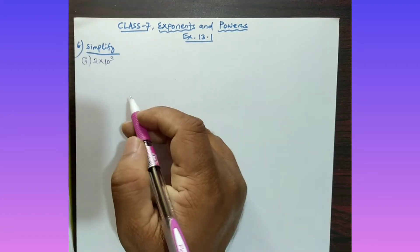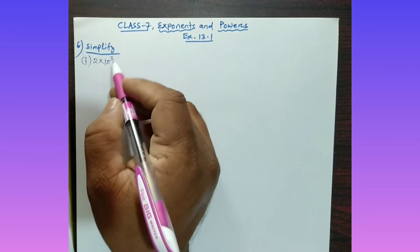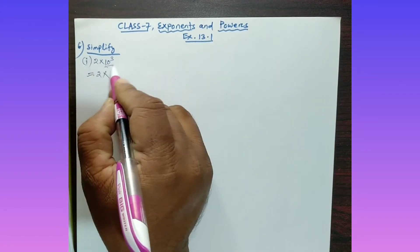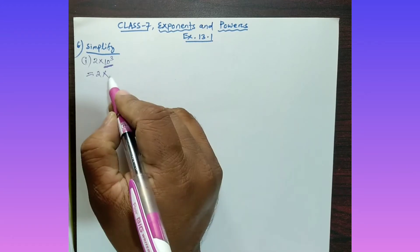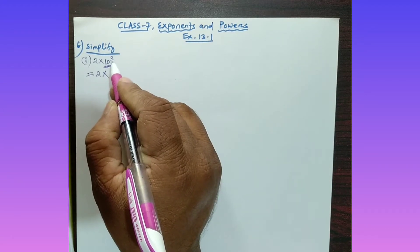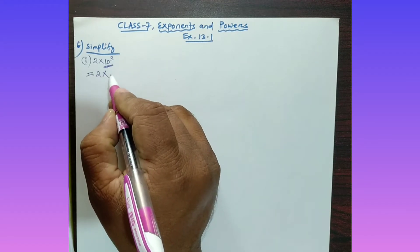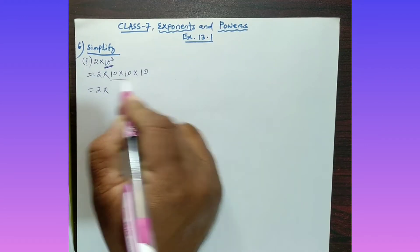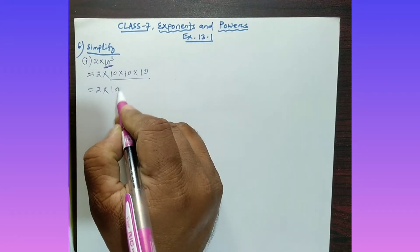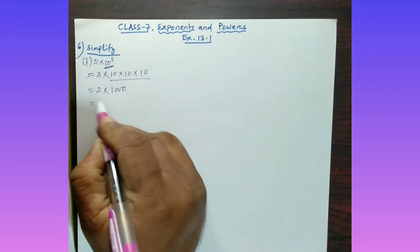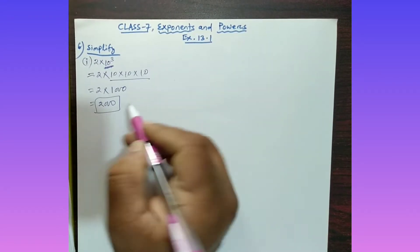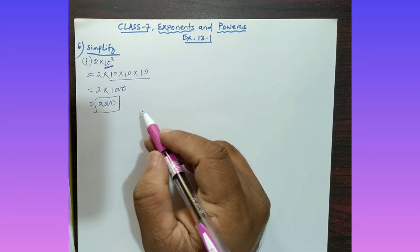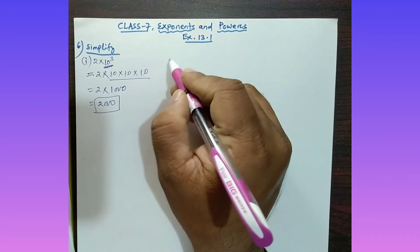Question number 6, part (i): Simplify 2 into 10 to the power 3. So what does 10 cube mean? It means 10 is multiplied three times: 10 into 10 into 10, which equals 1000. So 2 into 1000 gives us the answer 2000.